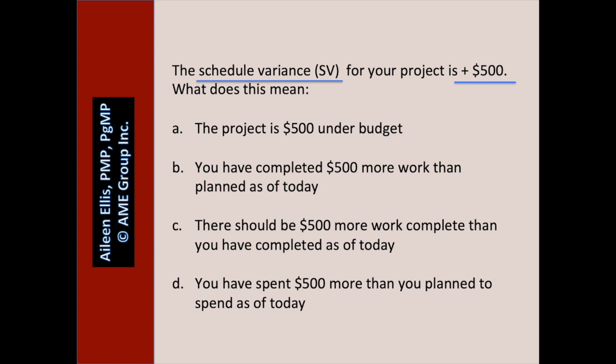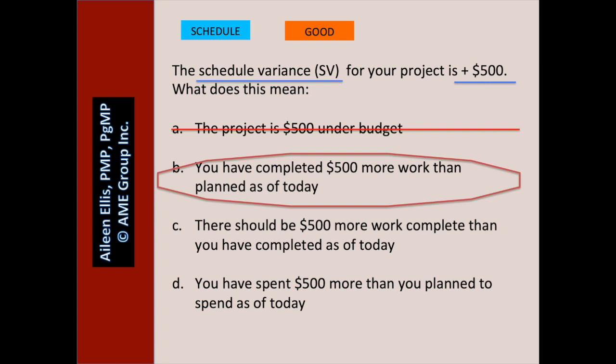The schedule variance for your project is positive $500. What does this mean? Pause the video and answer the question. Is this about schedule or cost? Schedule. Positive $500 — is that good or bad? That's good. So we're looking for a good thing from a schedule standpoint. A: the project is $500 under budget — no, we don't know because we don't know the cost variance. B: you have completed $500 more work than planned as of today — is that about schedule and is it a good thing? It is. So B is correct.